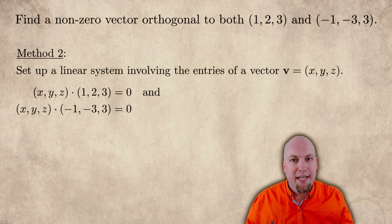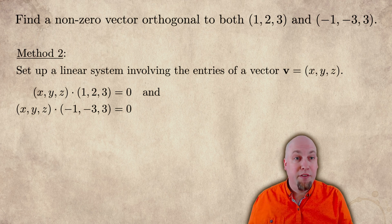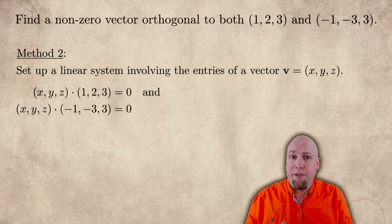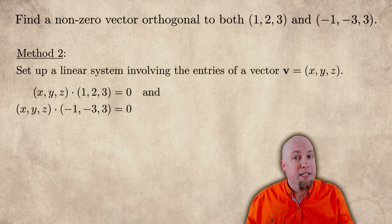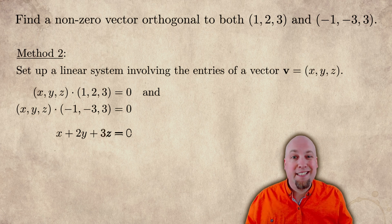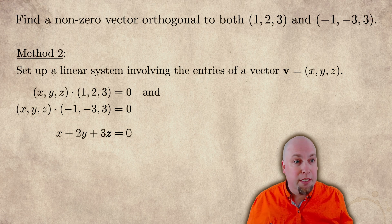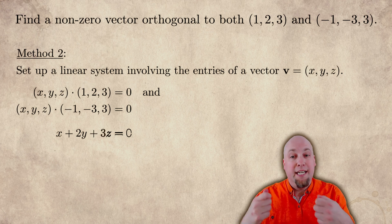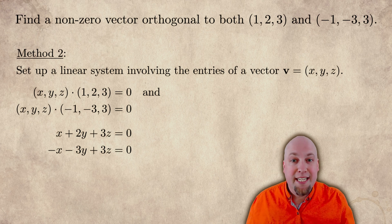I want my vector v = (x, y, z) to have dot product with these other two vectors equal to zero. So I want (x, y, z) dotted with (1, 2, 3) to equal zero, and (x, y, z) dotted with (-1, -3, 3) to equal zero. If you expand these out, these are just linear equations. (x, y, z) dotted with (1, 2, 3) equals zero is the same as saying x + 2y + 3z = 0. Similarly, I get the linear equation -x - 3y + 3z = 0 from the second dot product.